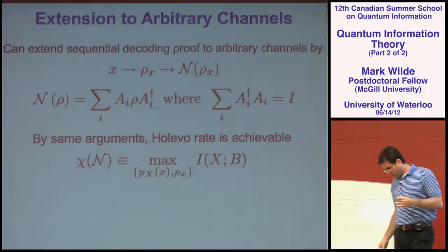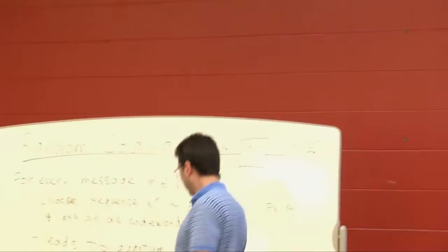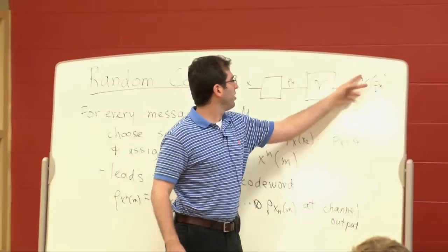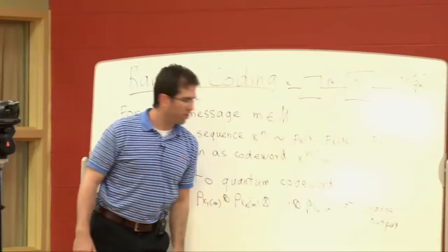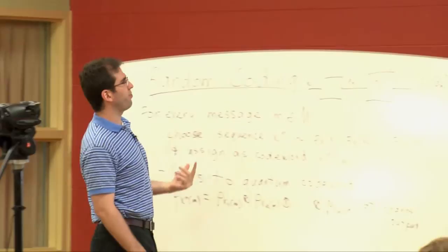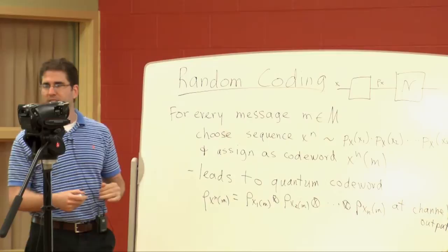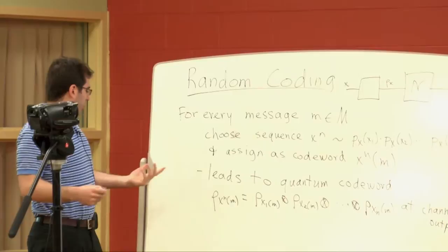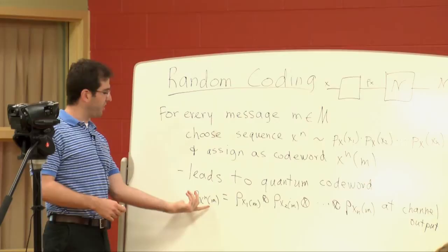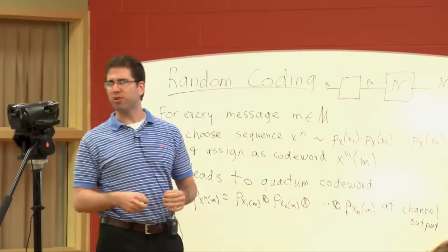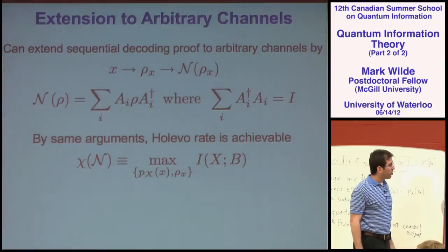The way sequential decoding will work is: we have mixed states at the output. These should all have an N in front—this is the output of the many uses of the CQ channel that Alice induces at the input. What comes out are tensor product states where the channel N is applied to each of these quantum states. What you need to do is figure out a test: is it this code word or not? You need machinery called conditionally typical projectors—a projector such that if I act with it on this state, the probability of getting outcome 'yes' is very high, 1 minus epsilon, for N large enough.